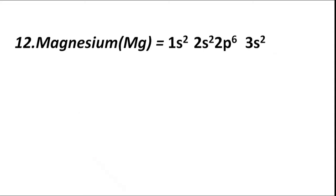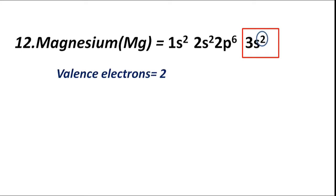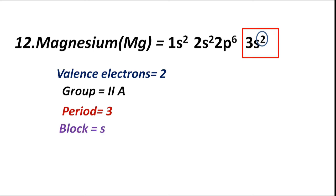Atomic number 12, magnesium (Mg), has electronic configuration 1s2 2s2 2p6 3s2. The valence shell is M, n equals 3, which contains 2 electrons. Valence electron is 2. Group IIA or 2A, period 3. M shell, n equals 3, hence period is third. Block S — valence electrons fill the 3s sub-shell. Valency is 2.